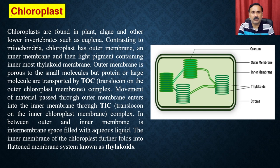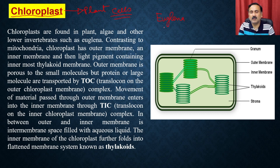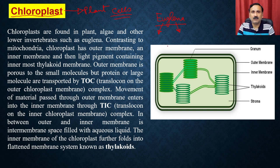The first organelle we are going to discuss is the chloroplast. Chloroplast is present in the plant cell and is completely absent in the animal cell, except that it is also present in euglena, which is considered to be a primitive animal because euglena has the ability to synthesize food as well as trap its prey and take food from external sources. So chloroplasts are found in plants, algae, and other lower organisms such as euglena.